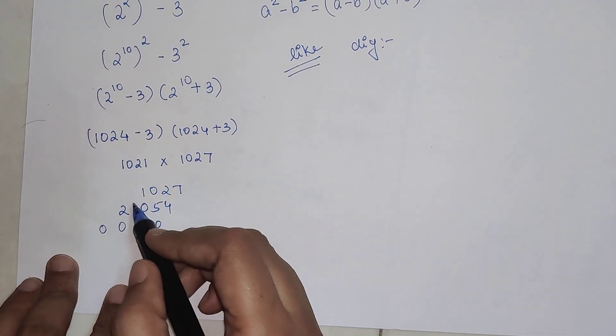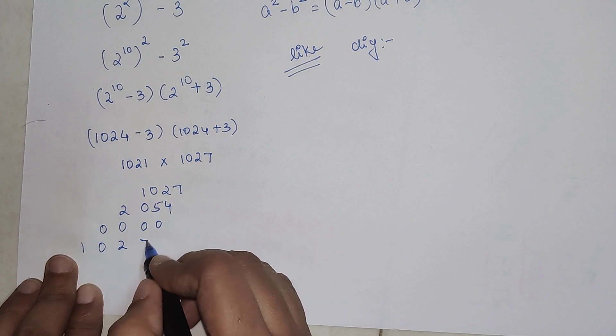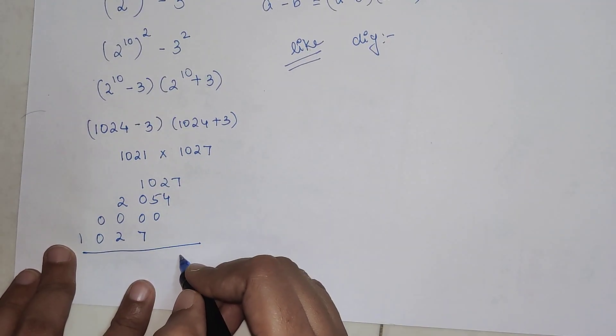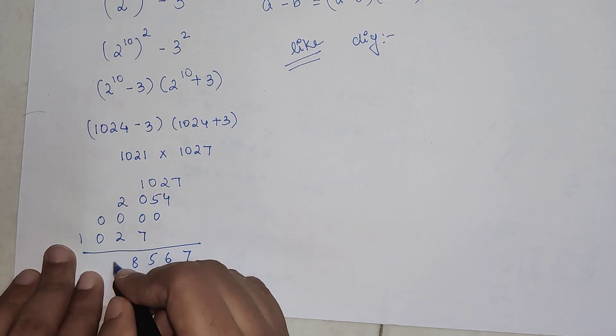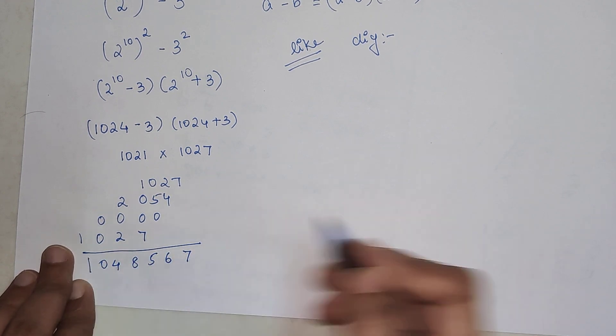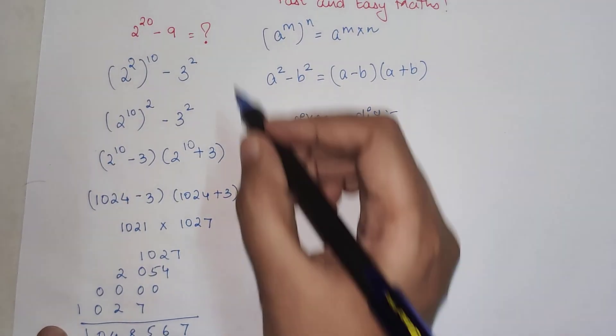The next number is again 1, so we'll have 1027. Your final answer is 1048567. That's your answer for this particular question.